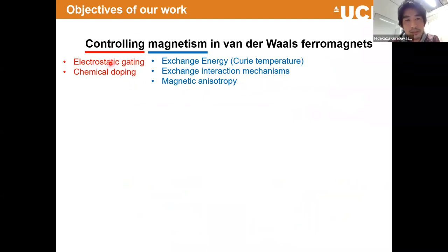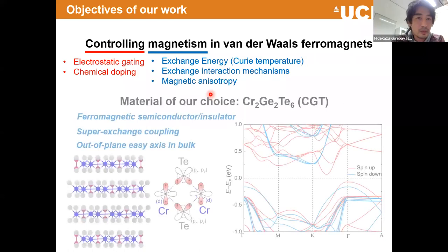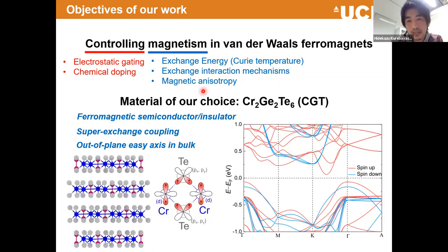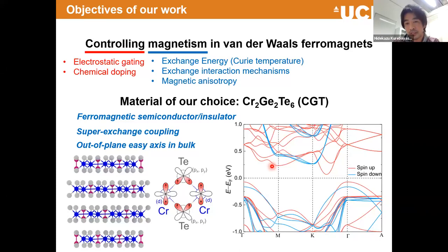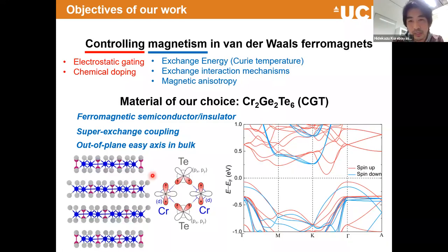The controlling approach is doping — either electrostatic gating or chemical doping — and we try to control magnetic properties such as Curie temperature, related to the exchange interaction mechanism and magnetic anisotropy energy. The material we are working on is chromium germanium telluride, abbreviated CGT in this talk. As a refresher: this is a narrow-band semiconductor, as shown by the calculated band structure. When cooled down, resistance rises significantly, and simultaneously we create long-range magnetic order. Exchange coupling is mediated through the tellurium, and chromium has a magnetic moment. The bulk material easy axis is out-of-plane — that is what we're trying to control.